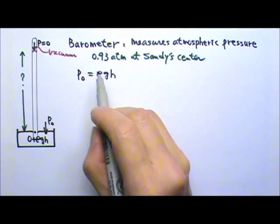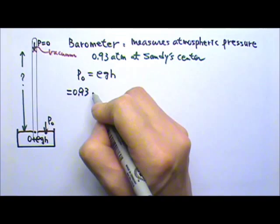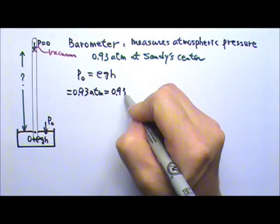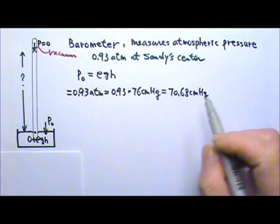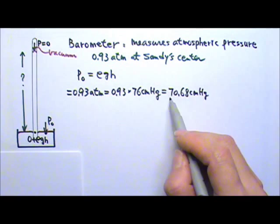So one way to find the height of the mercury column is to say the atmospheric pressure is 0.93 atm. And we know that every atmosphere is 76 cm mercury. So this gives us 70.68 cm mercury. So the mercury column must be 70.68 cm tall.